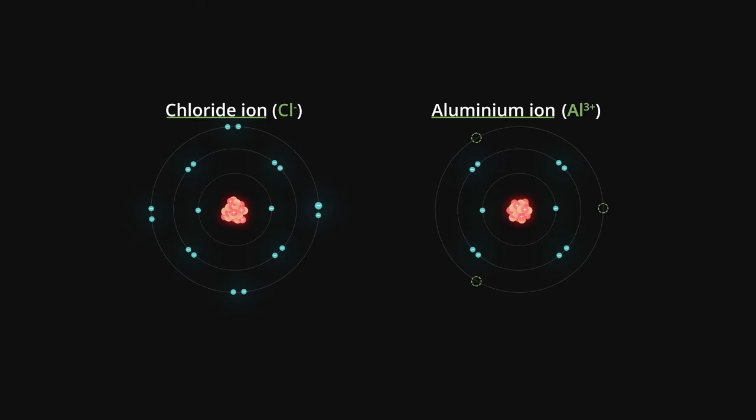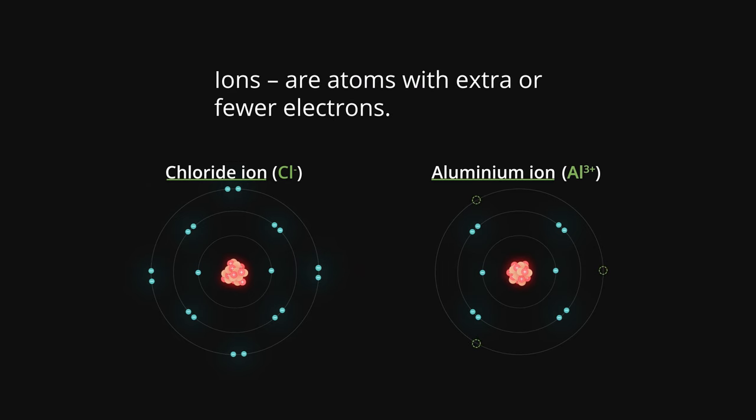Many of the elements around us usually exist in their ionic form. And ions are just like atoms, only with extra or fewer electrons.